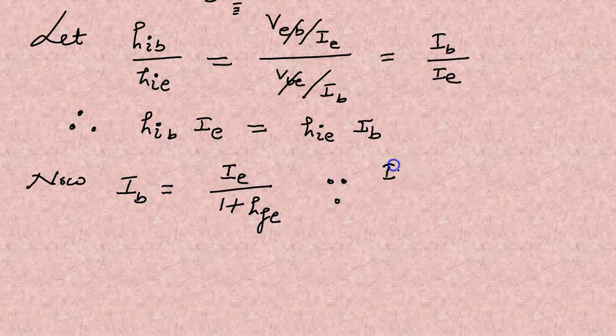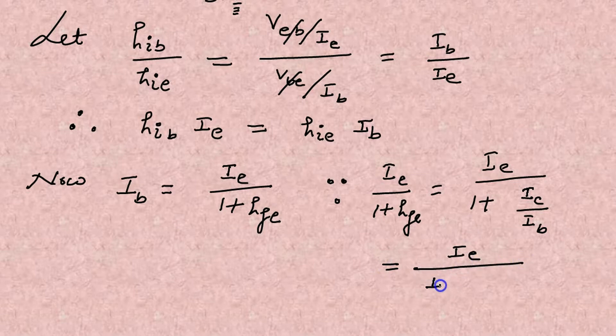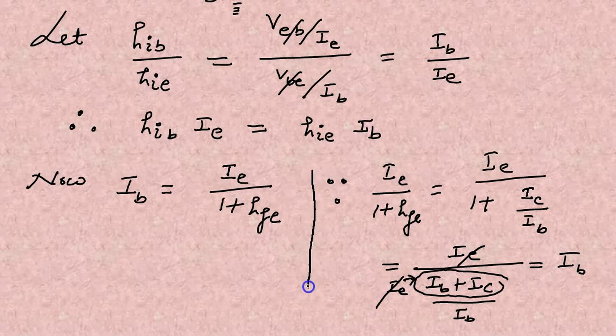Now this is a relation and can be proved. If substituting the HFE here and simplifying, you got the same thing IB. Because IB plus IC is what? IE. So IE, this is IE and IE cancels out. What's left? Only the IB. So we can say this is an important expression again. IB can be written as IE upon 1 plus HFE. Always remember this.